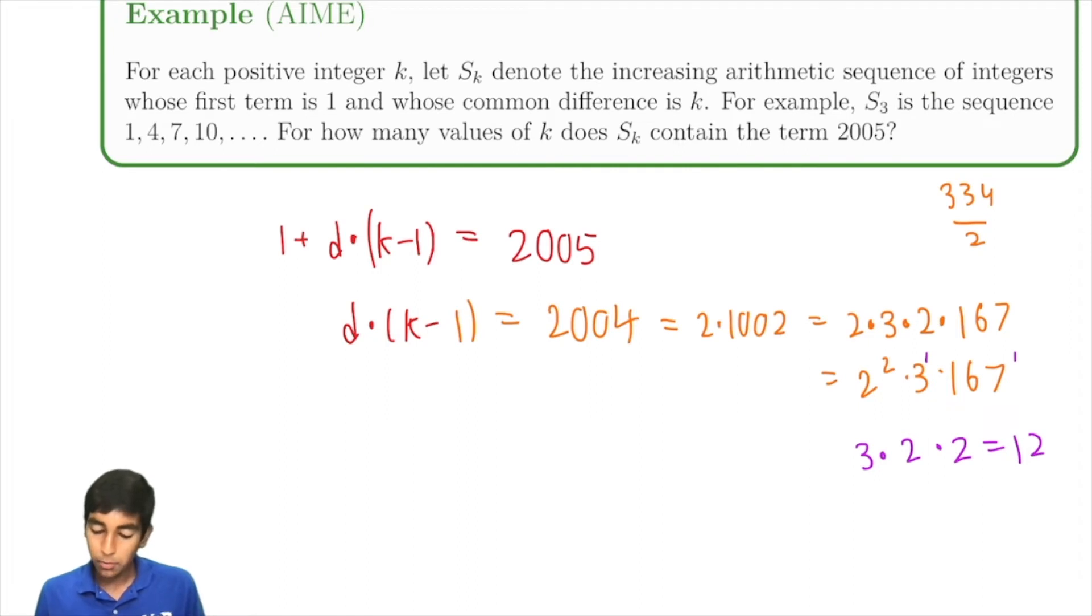So, there's 12 possible choices of k minus 1. And guess what? All of them work, because all of these factors are going to be positive and 1 or more. So k will also be positive as well, which is exactly what we want. So, all 12 of these factors work, and 12 is our answer.